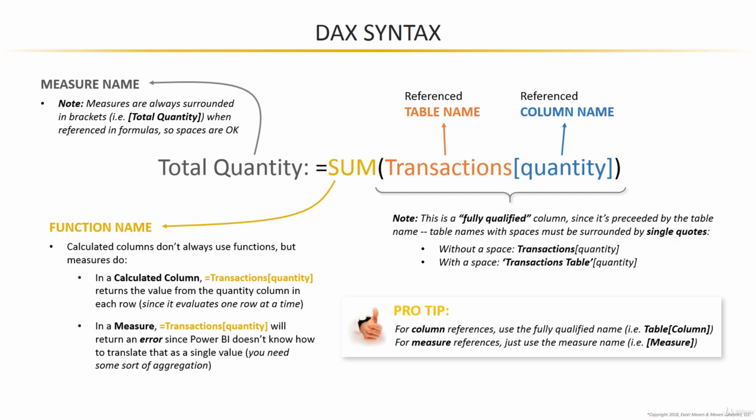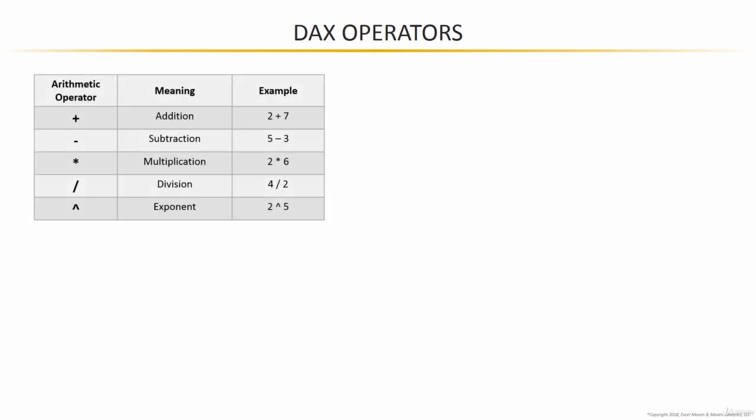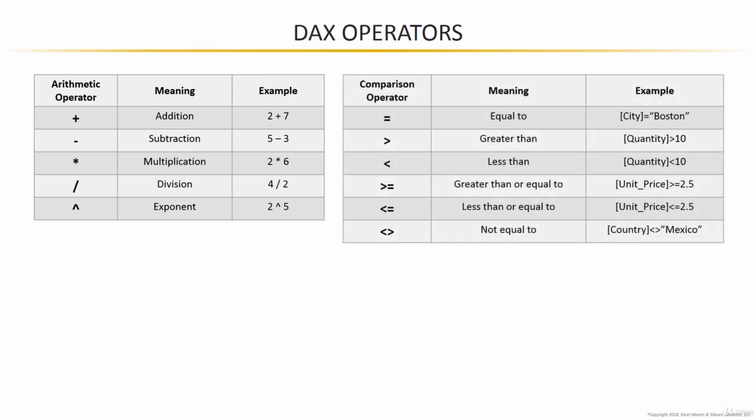Moving on, let's talk about some common DAX operators — most are extremely straightforward. You've got basic arithmetic operators: addition, subtraction, multiplication, division, and exponents. You also have comparison operators: equal to, greater than, less than, greater than or equal to, less than or equal to, and not equal to, with examples shown.